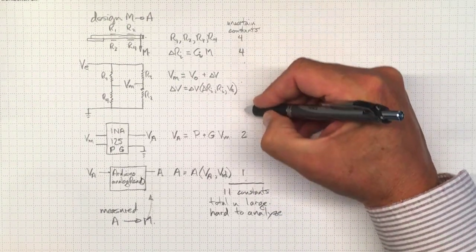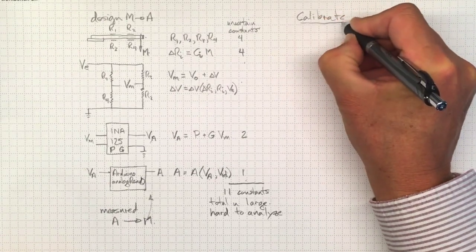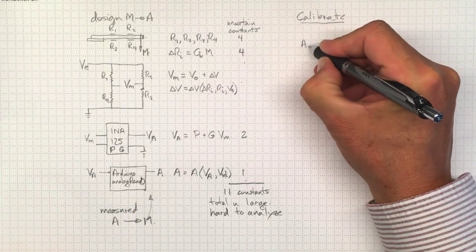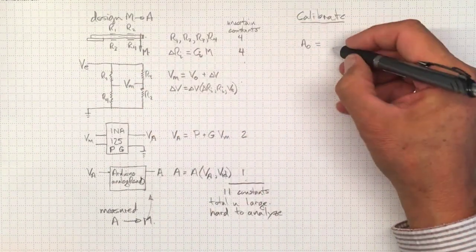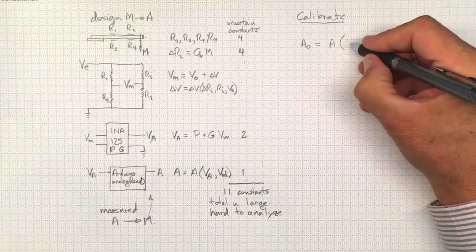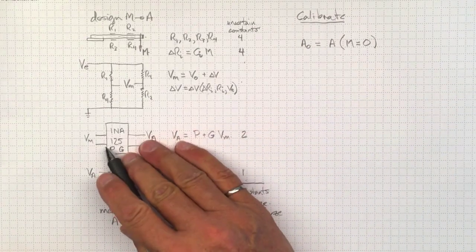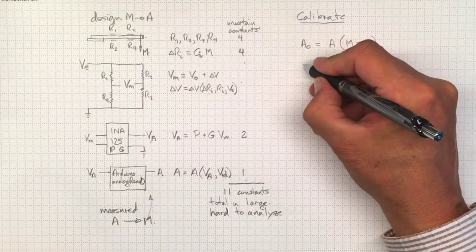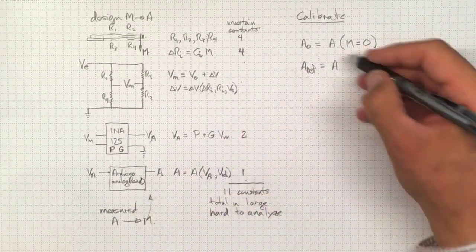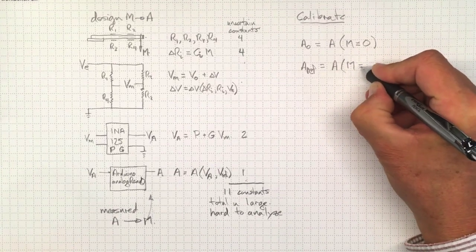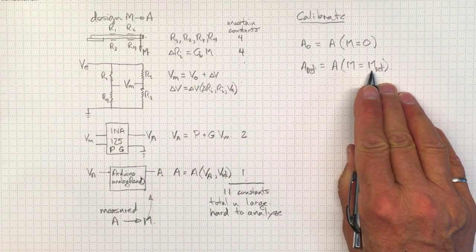So if I calibrate, I've already built the system. So let's measure A0. And that'll be just whatever A value comes out of this end when I have no mass on here. So it's the A value I get when m is equal to zero. And then let's measure for reference mass. I can take, say, a five kilo mass and hang it on the end. And I'll get another value for A. I'll call that A reference. And it's whatever came out of my measurement system when the mass on the end was equal to the reference mass. So I've now got two points. I can do a calibration based on those two points.